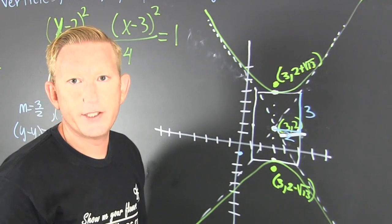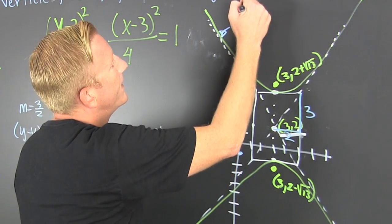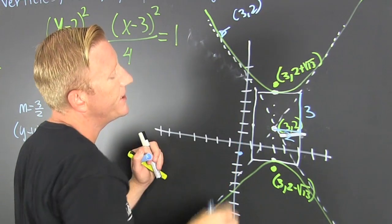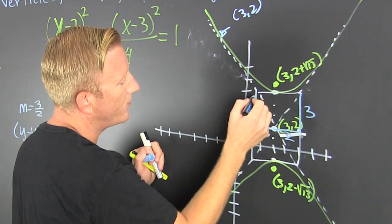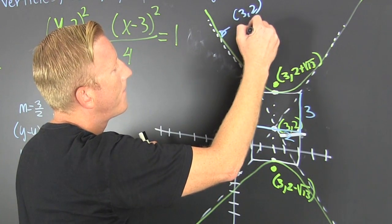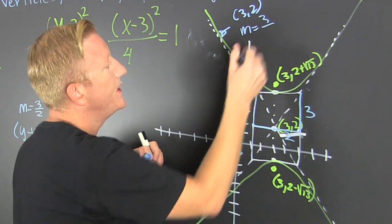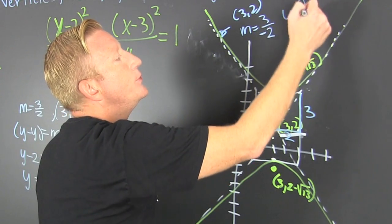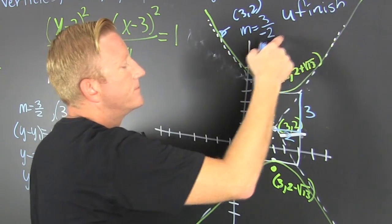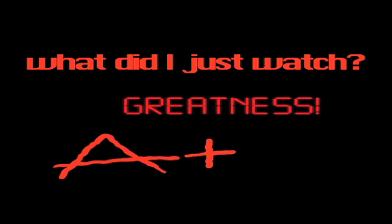For the other asymptote: same point (3, 2), but this time the slope is negative — it rises 3 and runs 2 in the negative direction, so slope is -3/2. Use the same point-slope method and you can finish that one yourself.